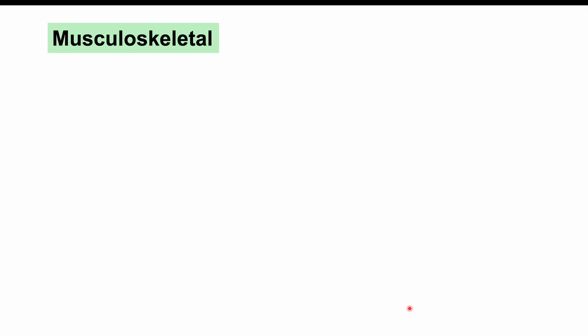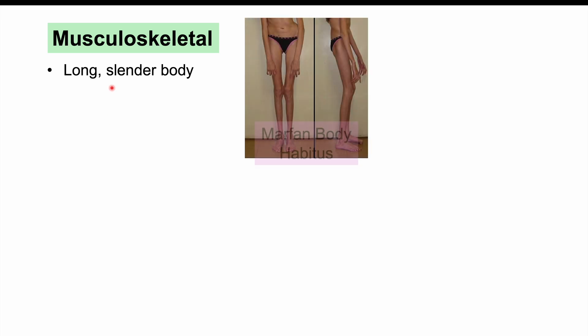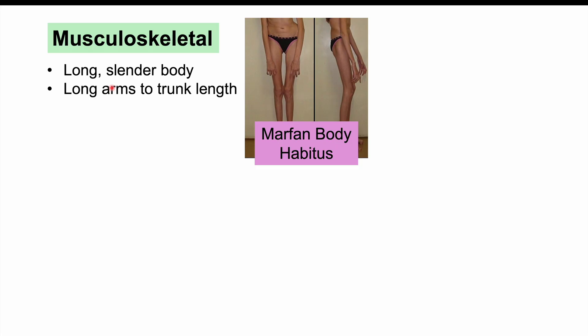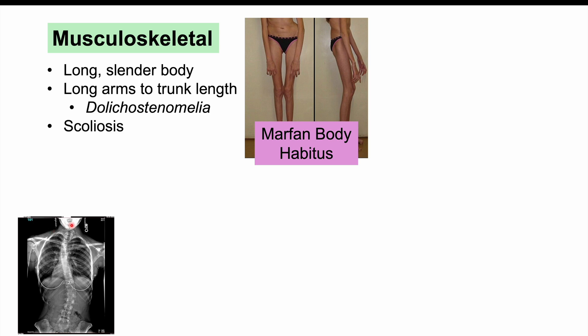Now let's discuss the signs and symptoms of Marfan syndrome by bodily system. Starting with the musculoskeletal system: one clinical feature is a long slender body, termed the Marfan body habitus — very tall, very thin individuals with long arms and long legs. The arms are disproportionately long relative to the trunk, and these long arms and legs are termed dolicostenomelia. We can also see scoliosis, where the curvature of the spine is altered in an S shape.